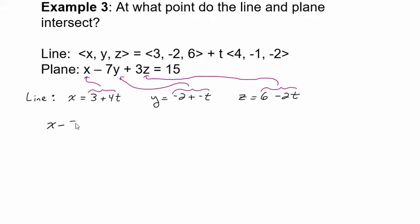So x minus 7y plus 3z equals 15 is my plane. Well I know x is equivalent to 3 plus 4t, I know y is equivalent to negative 2 minus t, and I know z is equivalent to 6 minus 2t.